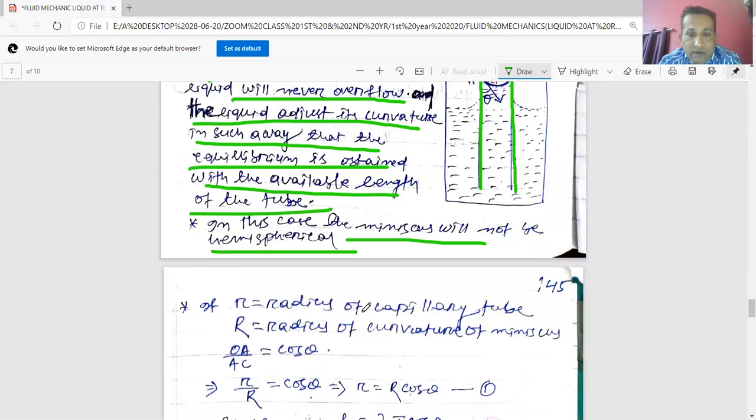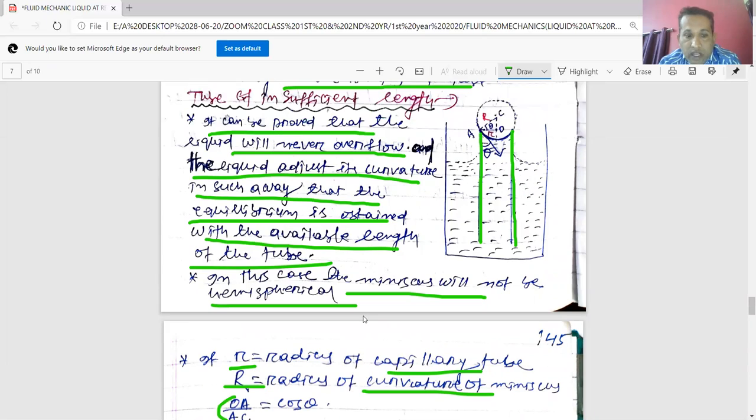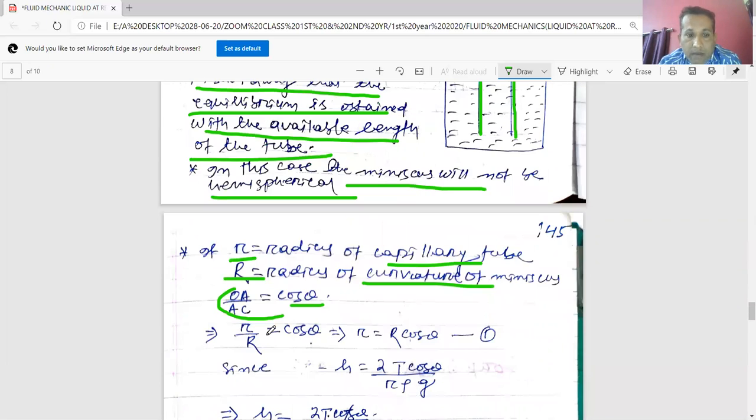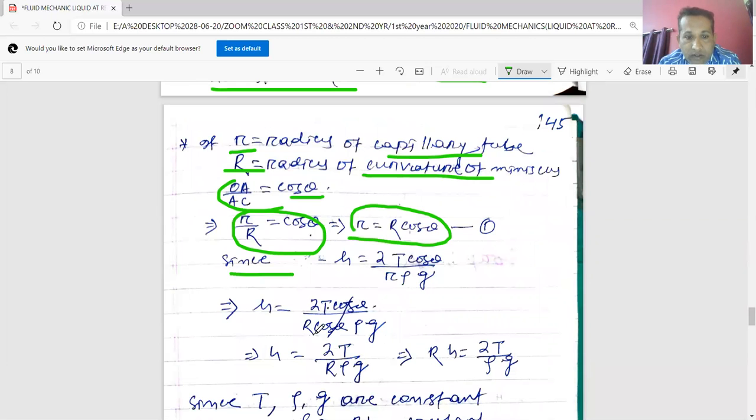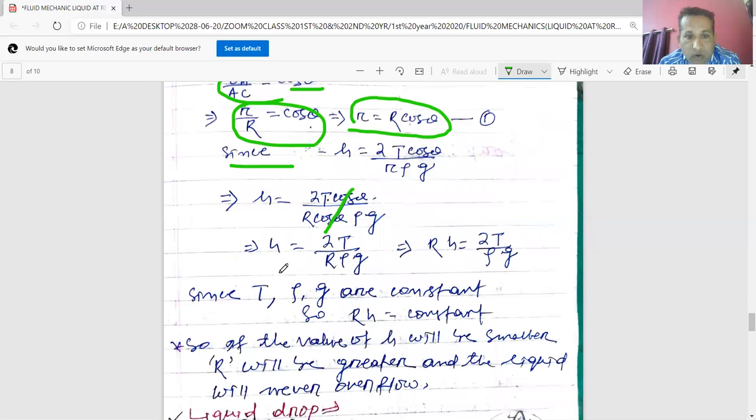r is the radius of the capillary tube. R is the radius of the curvature of the meniscus. Here in the triangle, this is your AOC triangle. You can get OA by AC equals cos θ. So r by R equals cos θ. That implies small r equals R cos θ. So since h equals 2T cos θ / rρg, we can put in place of small r, R cos θ. So cos θ cos θ will get cancelled. So h equals 2T / Rρg.